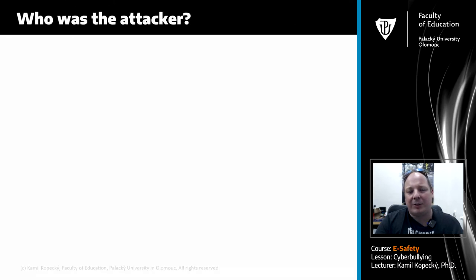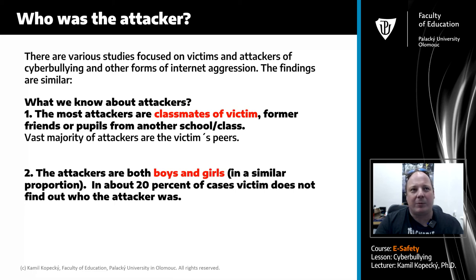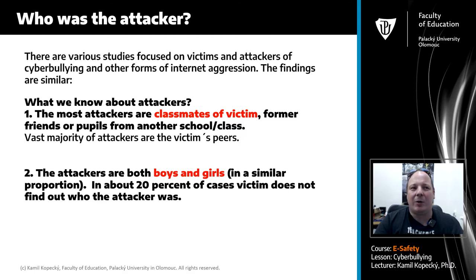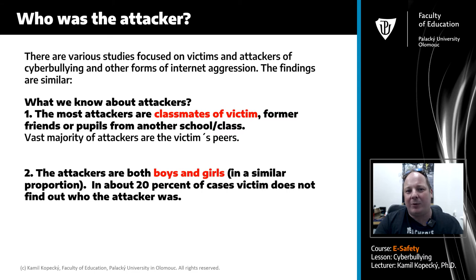Now let's say something about attackers — who is the attacker? We need to know something about motives. The most attackers are classmates of the victim, former friends, or pupils from another school or class. There are many studies focused on cyberbullying and the findings are similar: in most incidents the attackers were other children — no strangers, no anonymous adult people — just classmates or friends. In the most frequent types of cyberbullying, we are not speaking about cyber grooming or sextortion, but the most common forms.